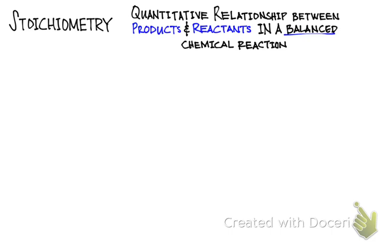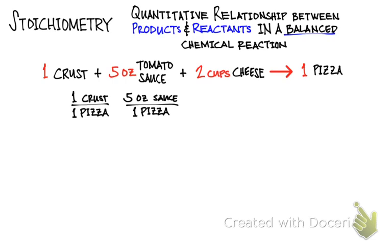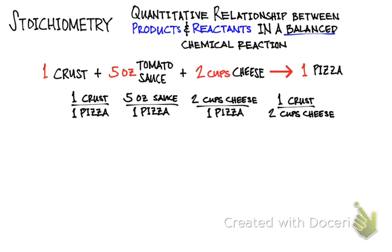Let's look at a simplified example to help you understand the concept of stoichiometry. Let's say that you work for a pizza company — let's call it Best Pizza Out There Company. Shown here is the recipe for a simple cheese pizza that you are required to follow. Here's a ratio: if you have one crust, you could make one pizza. If you have five ounces of tomato sauce, you could make one pizza. Two cups of cheese gives you one pizza, and one crust requires two cups of cheese.